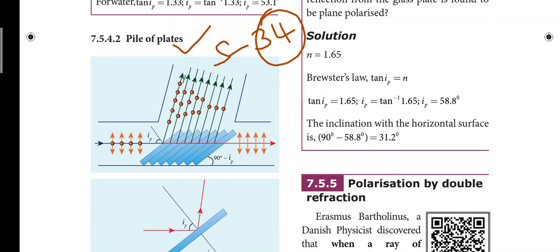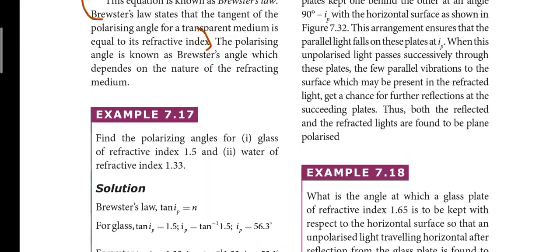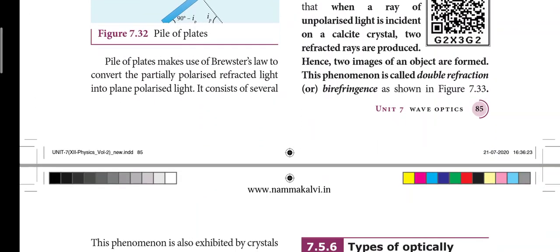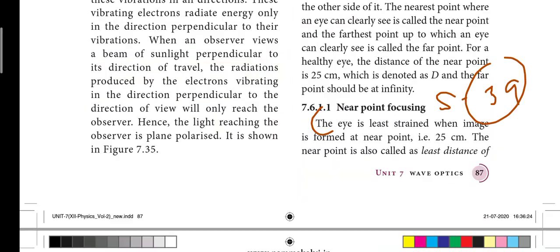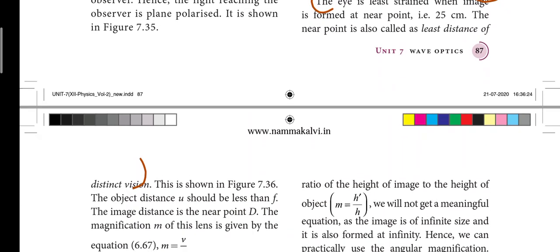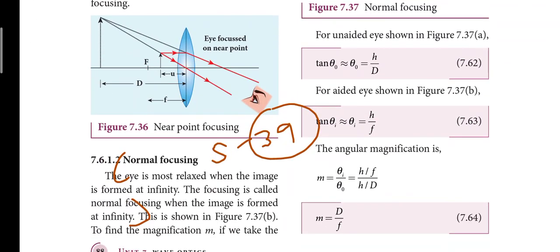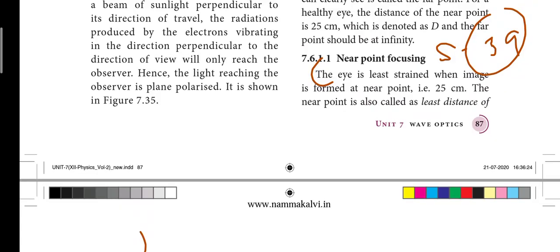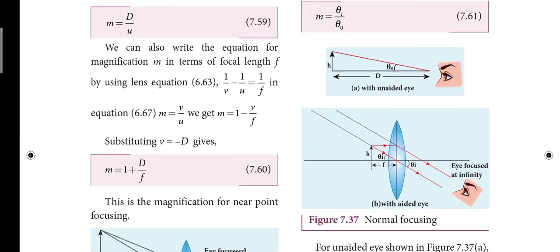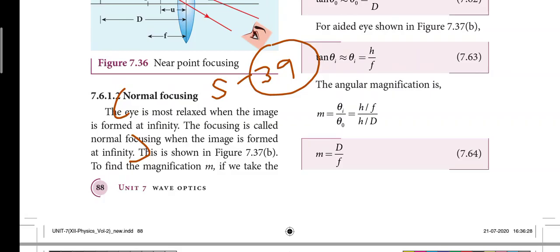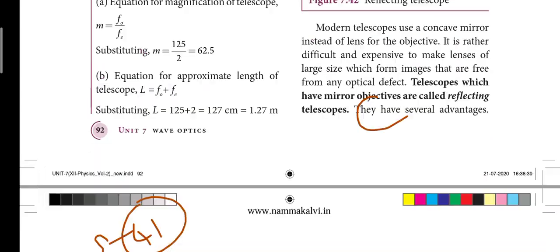Next: thirty-fourth short answer — piles of plate — and the paragraph full. Next: the distinct vision, near point focusing and normal focusing — thirty-ninth short answer.